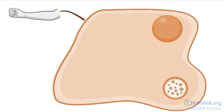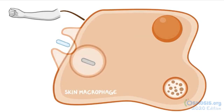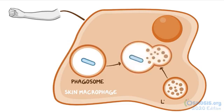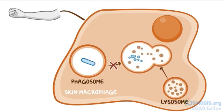Mycobacterium leprae can also infect skin macrophages. The bacteria is ingested by macrophages and wrapped up in a vesicle called a phagosome, which would normally merge with another intracellular organelle called a lysosome. Inside the phagolysosome, the bacteria would normally be destroyed, but Mycobacterium leprae has the ability to inhibit the phagolysosomal fusion, which allows the bacteria to survive inside the macrophages and replicate there.